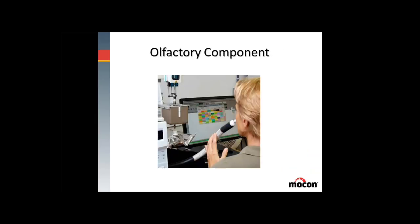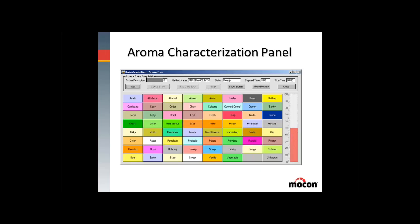Here we show the olfactory component of this instrument. We have the scientist — our olfactory detector — sitting at the sniff port performing the olfactory analysis. The sniff port is connected to the end of the second column of the gas chromatograph using the open split interface. As the compounds are presented at the sniff port, the individual uses a specialized record-keeping software package that allows the user to quickly identify and characterize the aroma or odor events that they are sensing. A blow-up of this characterization panel is shown here, where the olfactory person records the corresponding odor assessments for each of the individual compounds that are eluted.